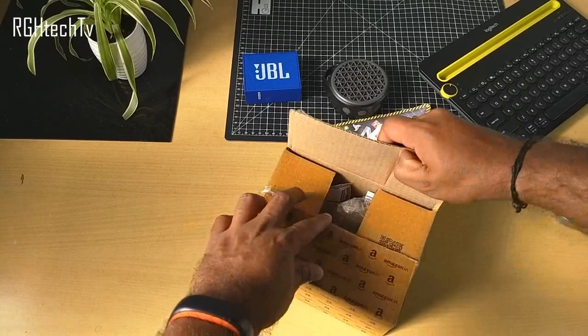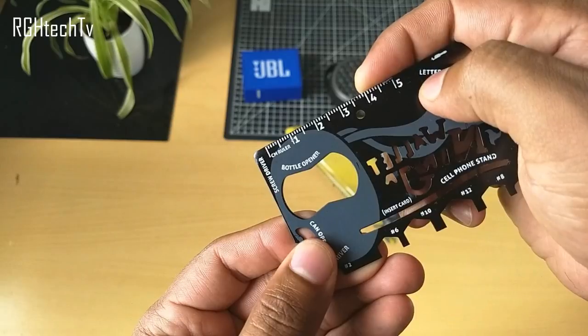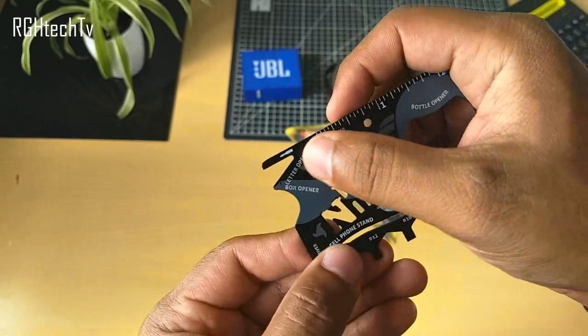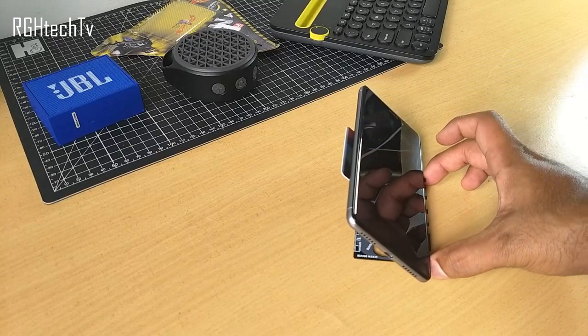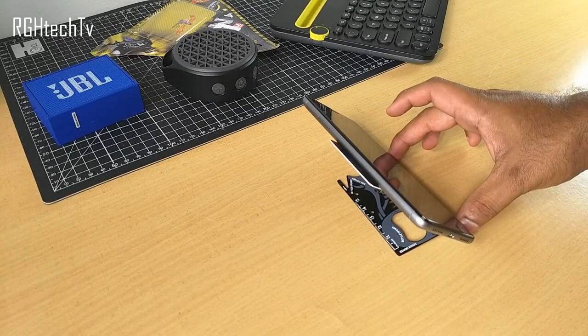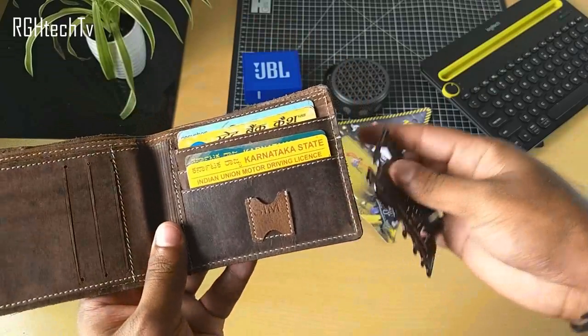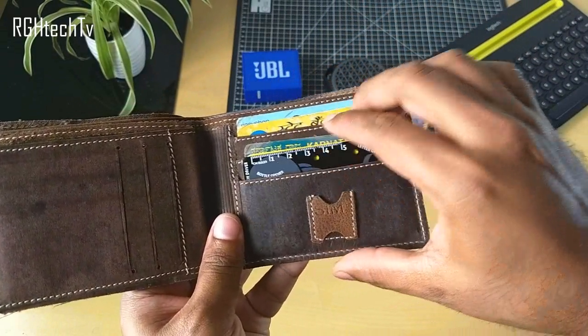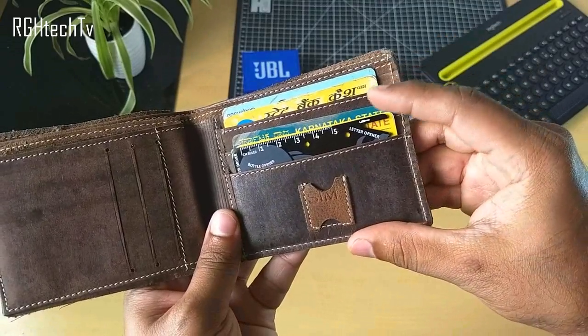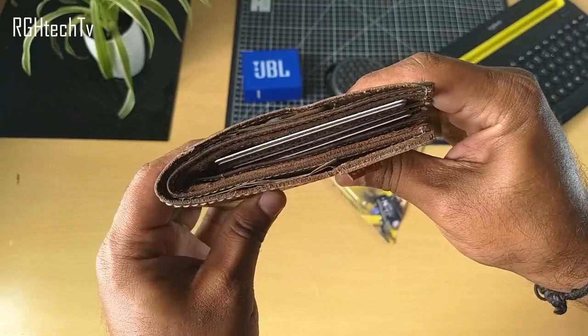It has inbuilt centimeter ruler and inch ruler as well. Plus you can insert a card and make it work as a cell phone stand. It feels sturdy, it's made up of very good quality steel. More than anything it's ultra portable and will fit into any wallet, so no matter what you can always carry it with you. It's a convenient and very useful tool available at around 200 rupees.